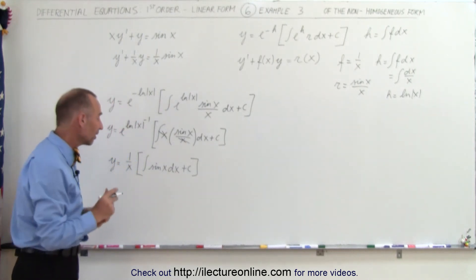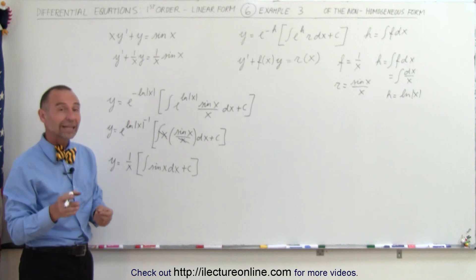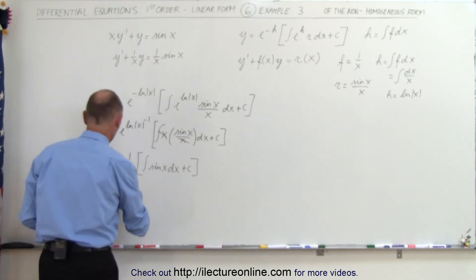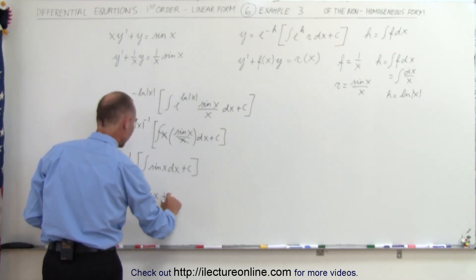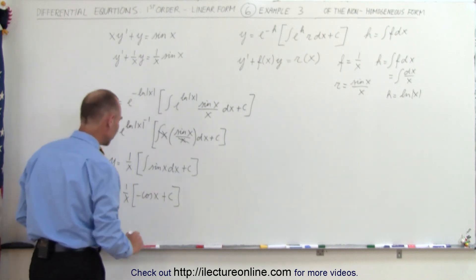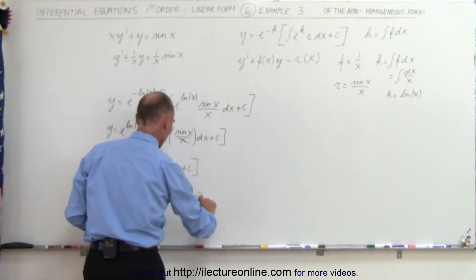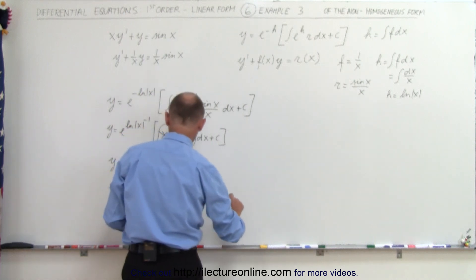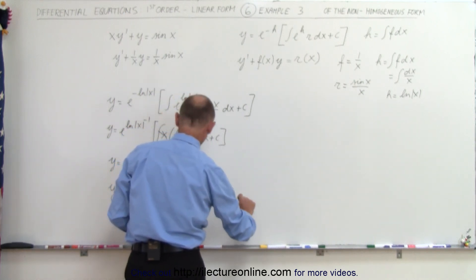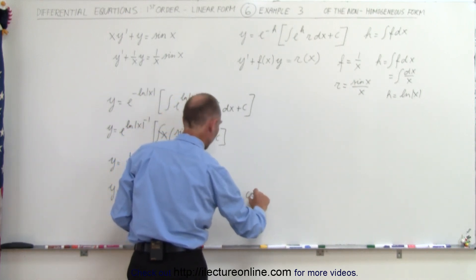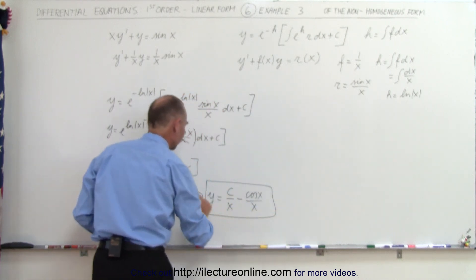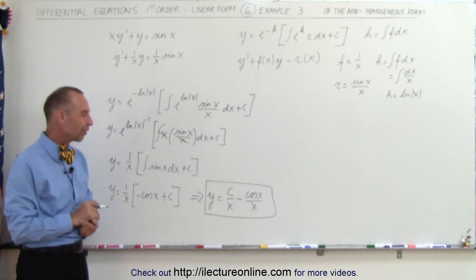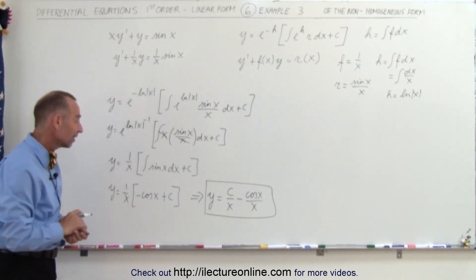Now we can integrate sine of x. Since the derivative of cosine is sine, the integral will be negative cosine, so y equals 1 over x times negative cosine of x plus a constant of integration. Multiplying this out, y equals c divided by x minus cosine of x over x, and that is the solution to our first order non-homogeneous linear differential equation.